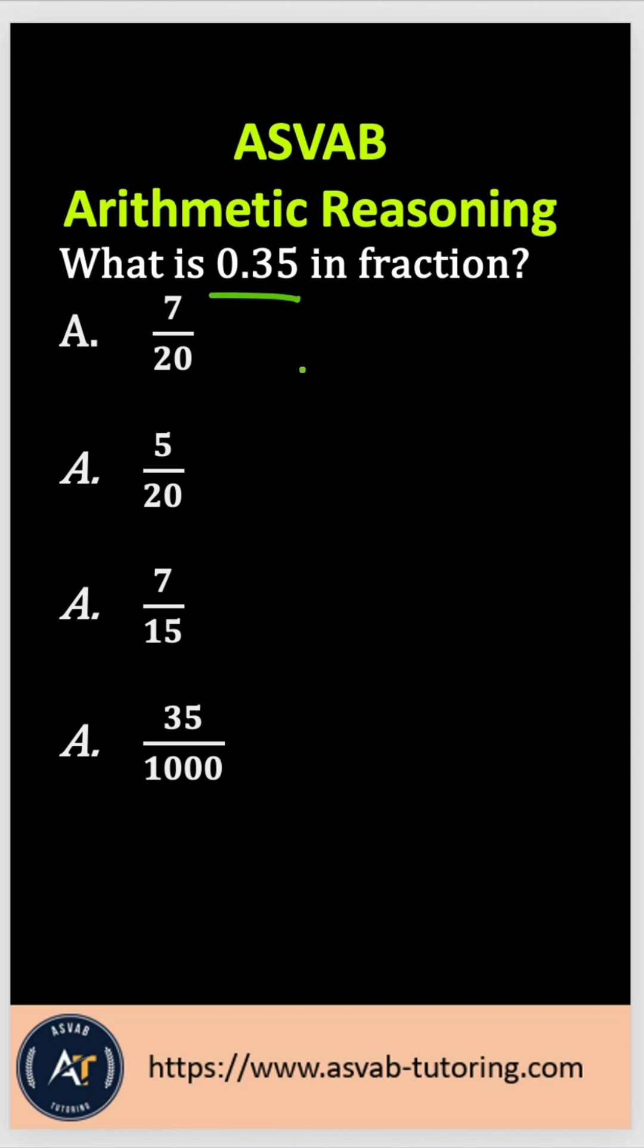You have to write the number first. So you have 35, right? And then because of the decimal, you need to put 1 and after the decimal, how many digits you have? You have 1, 2, you have to add two zeros.